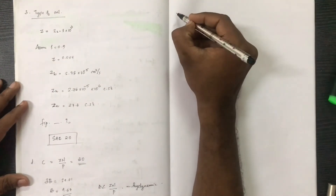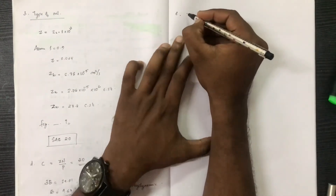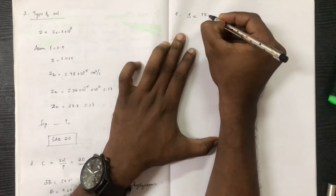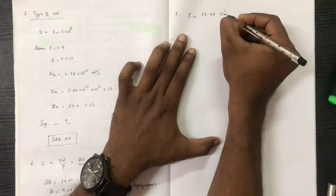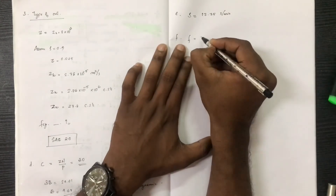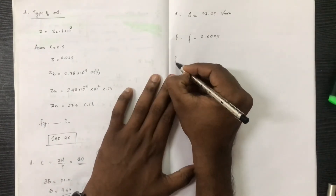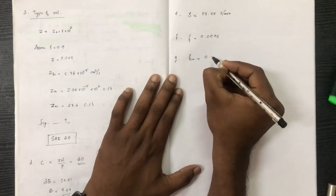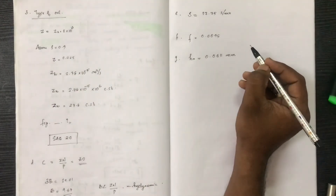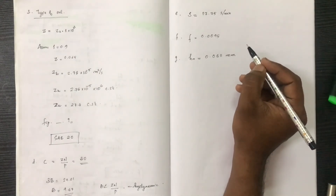Next, you will see values A, B, C, D, E, N. The Sommerfeld number SN is 17.75. The coefficient of friction F is 0.0095. The minimum film thickness H is 0.0611 mm.